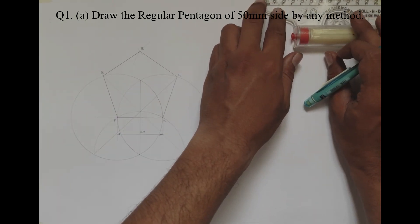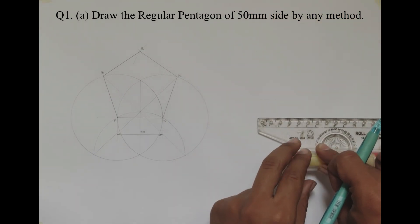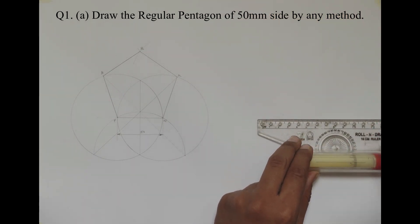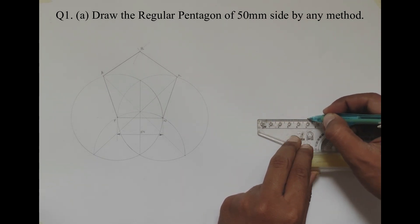Let us draw the pentagon by another method, that is our general method for any polygon. The first step is to draw a horizontal line of given length, that is 50mm in our case.